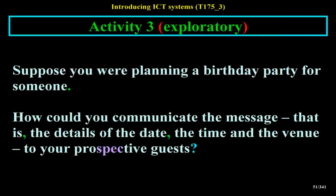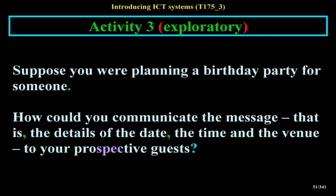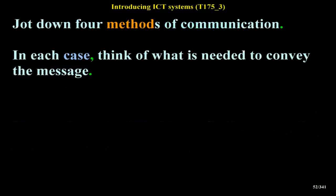Activity 3 Exploratory: Suppose you were planning a birthday party for someone. How could you communicate the details of the date, the time and the venue to your prospective guests? Jot down four methods of communication. In each case, think of what is needed to convey the message.